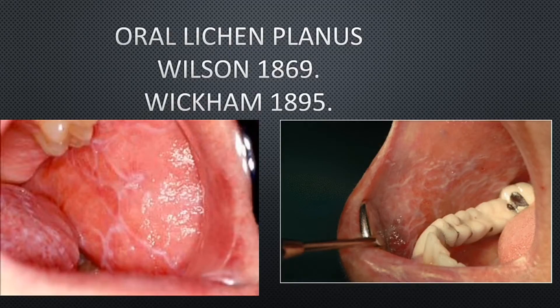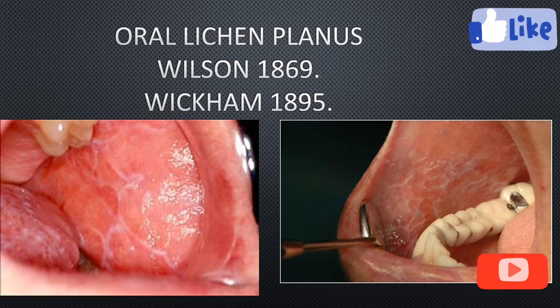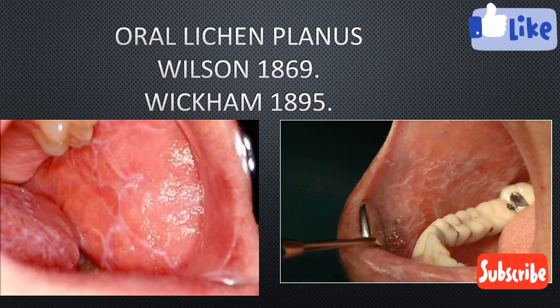Today we're going to talk about oral lichen planus. This is an immunological disease where there is a presence of white lines called striae, as you can see in the picture in the oral cavity. These are called striae, and this condition was discovered by Wilson in 1869. Later, Wickham gave the characteristic description of white striae.